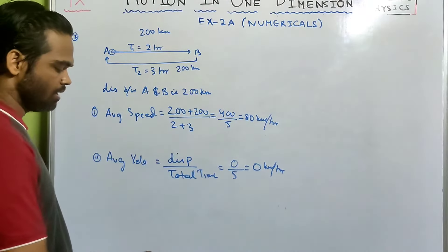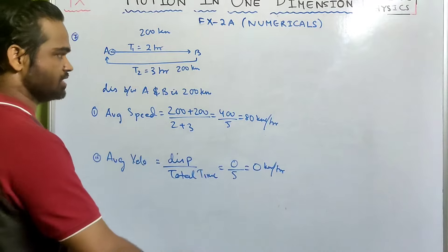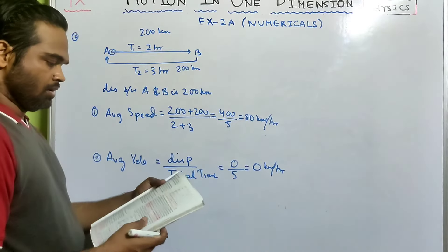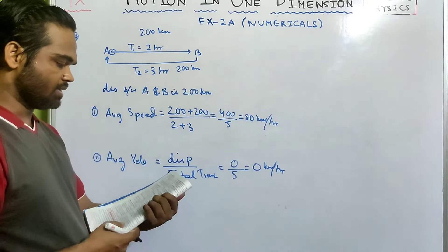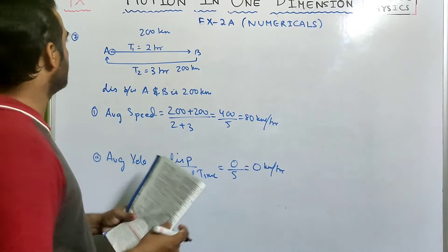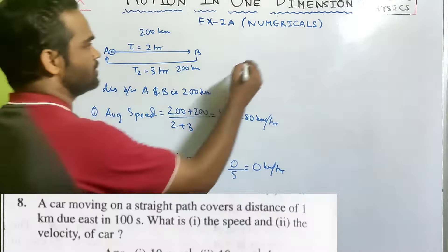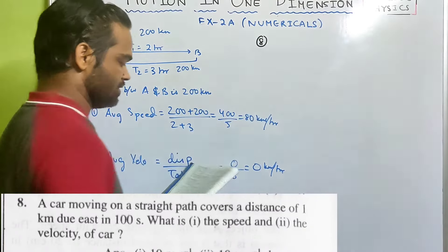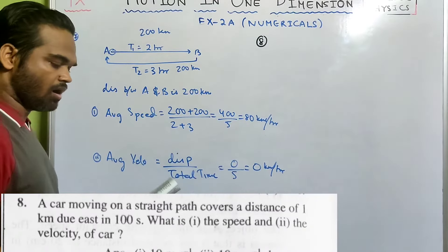Average velocity = displacement / total time. Since the train returns to the same starting point, displacement is zero. Therefore average velocity = 0/5 = 0.